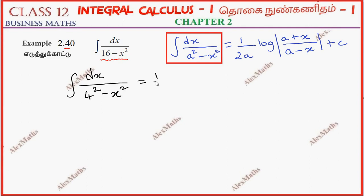If we apply the formula, 1 by 2a is equal to 4. Log of mod a plus x, so 4 plus x by 4 minus x plus c.